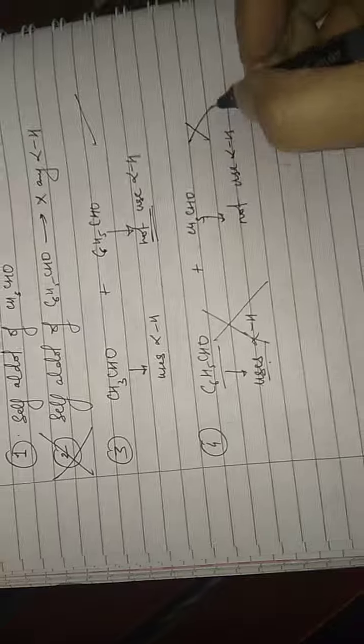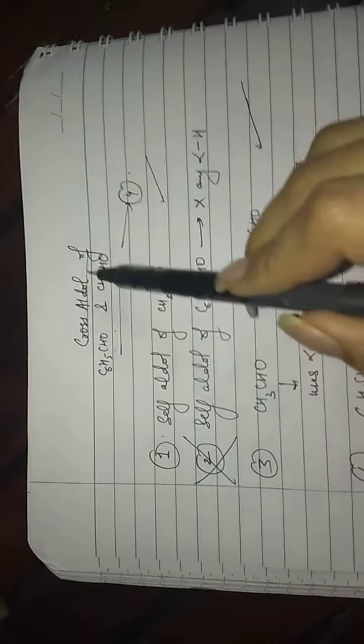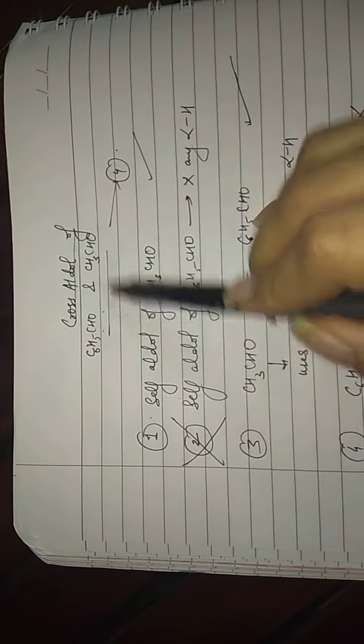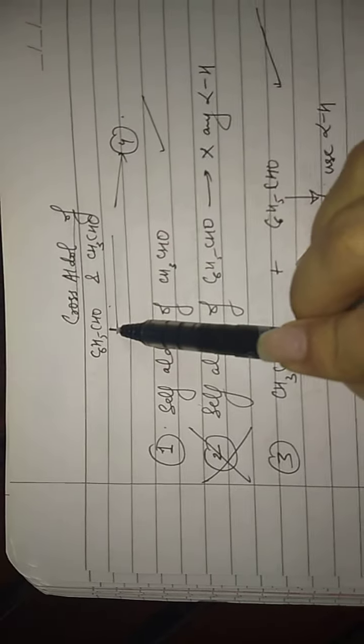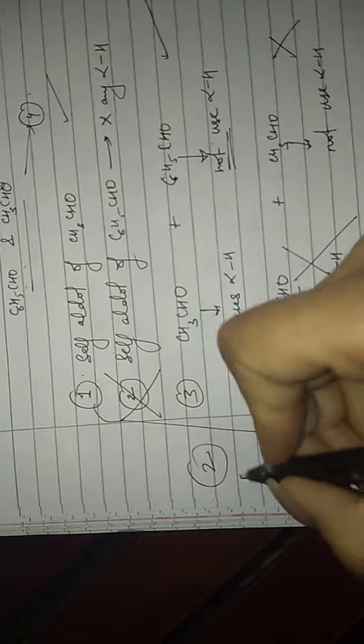So in total, how many products do you get in cross aldol of a pair of compounds where one is possessing alpha-H and one is not possessing alpha-H? You get only two products.